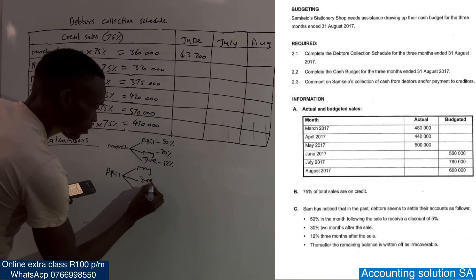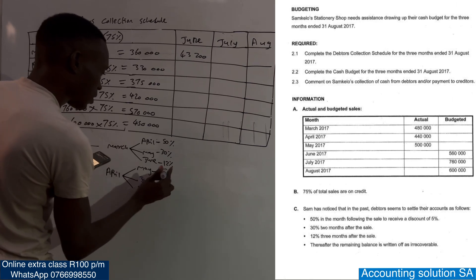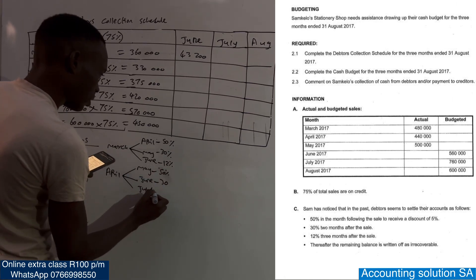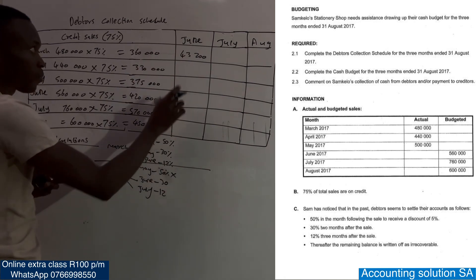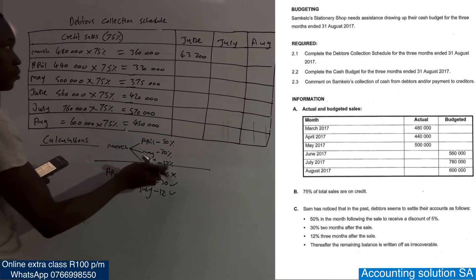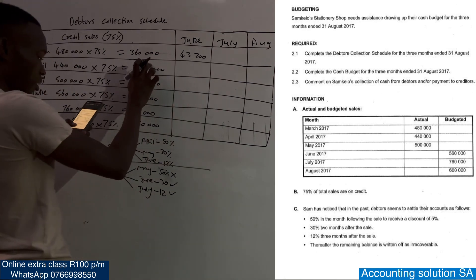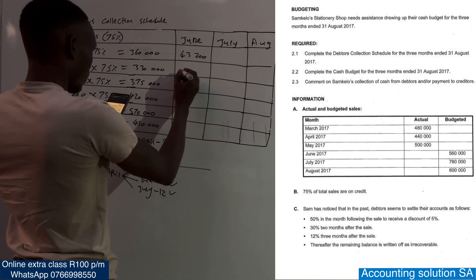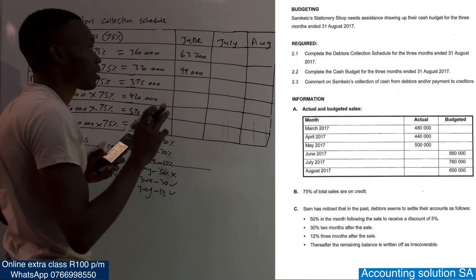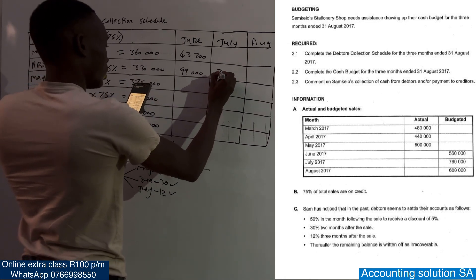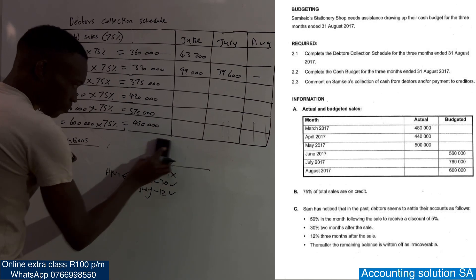For April, we collect from May, June, and July. In May we collect 50%, going down to 30%, then 12%. May is out of our required period, so June we collect 30% of 330,000 — no discount of 5% applies here. 330,000 multiplied by 30% gives us 99,000. Then in July we collect 12%: 330,000 multiplied by 12% gives us 39,600. We are not going to collect anything further.